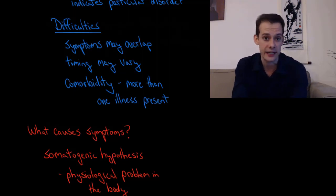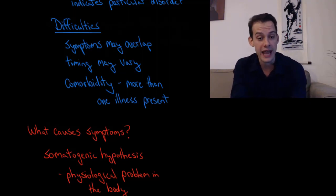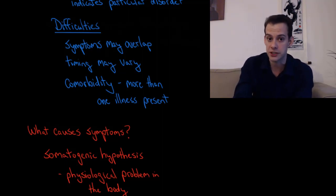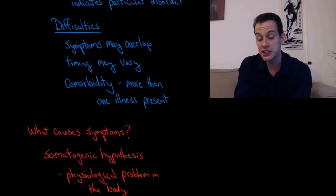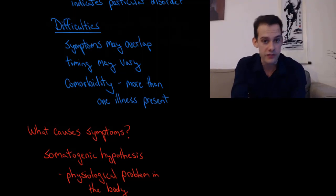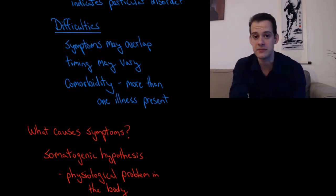Lastly, we have the problem of comorbidity — the idea that more than one illness can be present at once. Disorders are comorbid if they're occurring at the same time, and this is very common in psychological disorders. For instance, somebody with an eating disorder like anorexia nervosa may also be diagnosed with depression or an anxiety disorder. This makes things very complicated because you have symptoms, some of which go with one disorder and others with another, and it becomes difficult to determine how to divide them up.